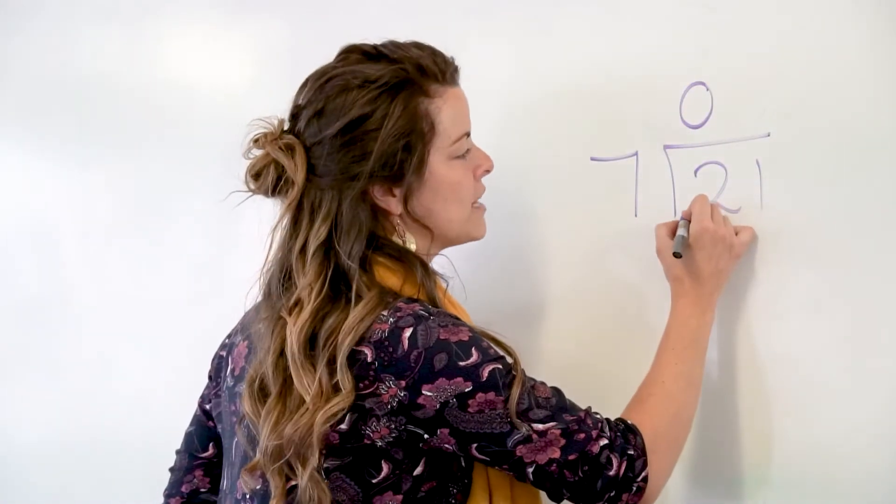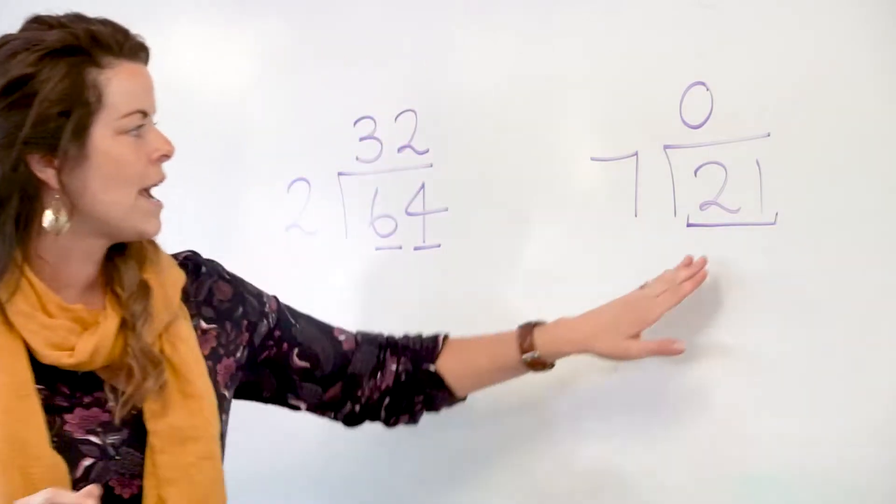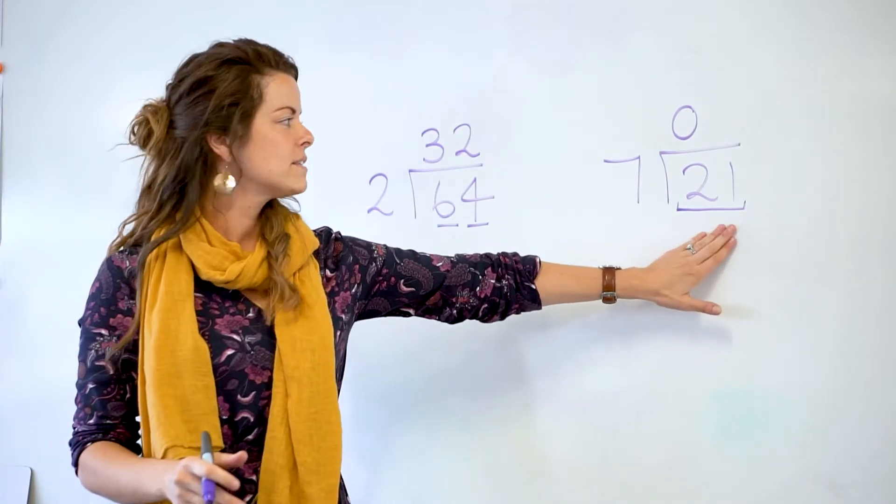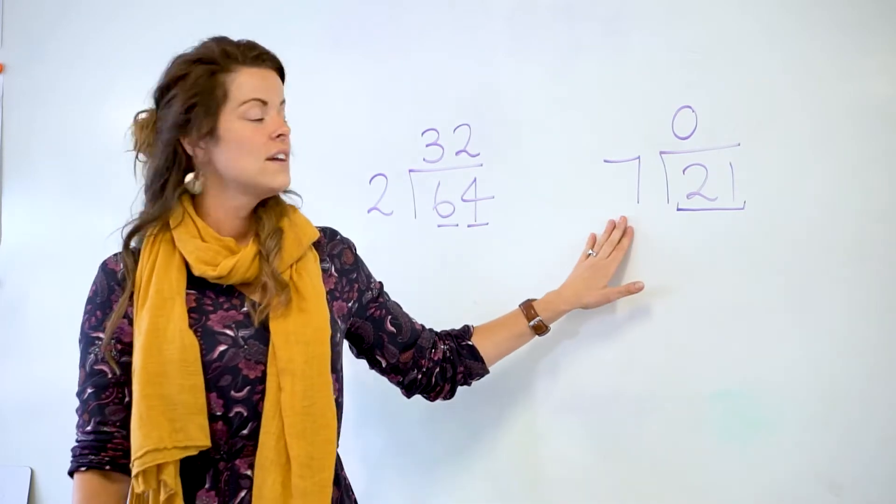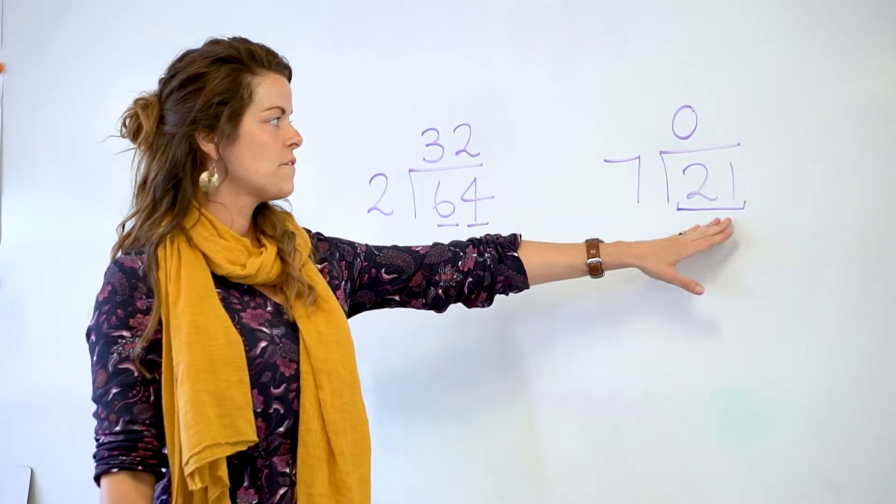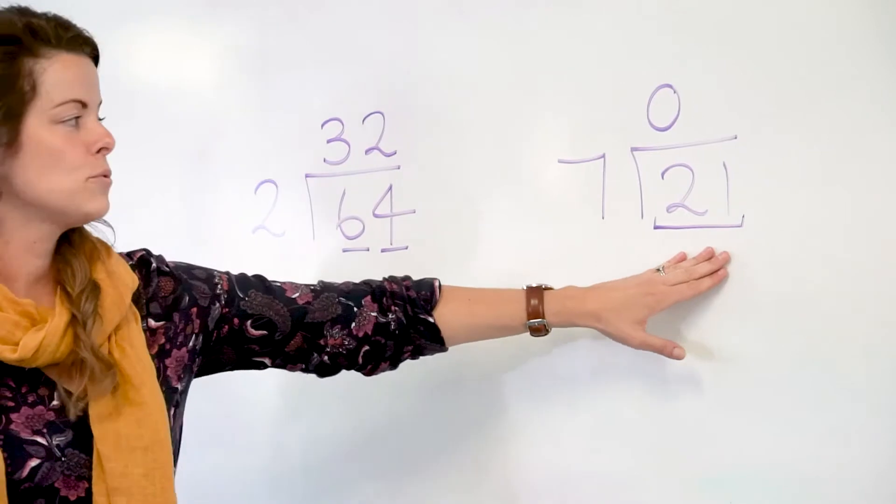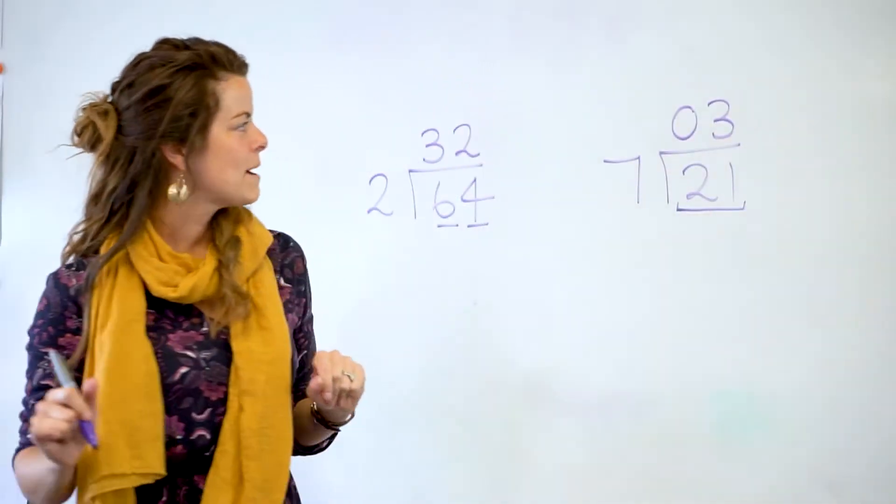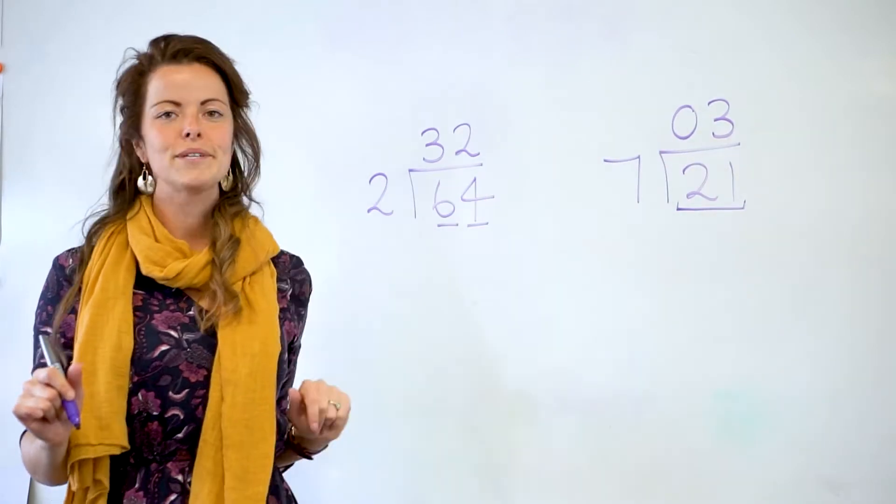Then what we do is - and I like to use this down the bottom to remind me that I need to join the two numbers together and use it as a whole number. So how many times does 7 go into 21? If I know my 7s or my 3 times tables, I know that goes in 3 times. And there's my answer. 7 goes into 21 three times.